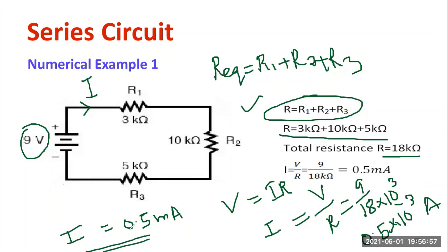Since 1 ampere equals 1000 milliamperes, applying the same concept, I am getting the answer as 0.5 milliamperes. Likewise, you need to solve different numbers of problems — this is only a simple example.